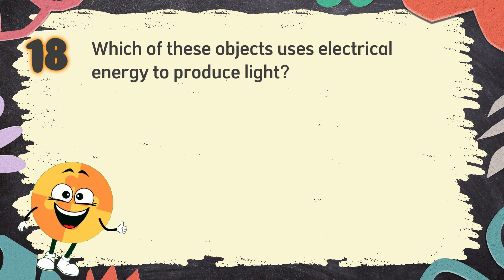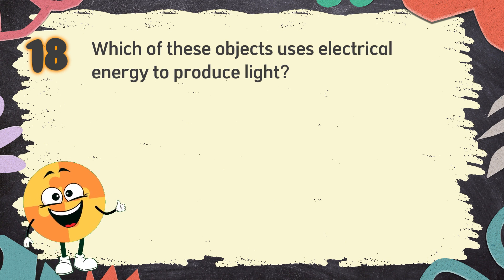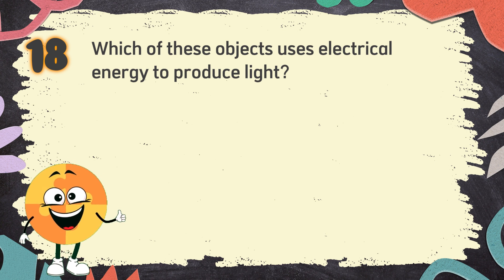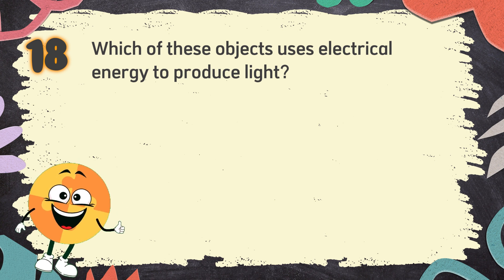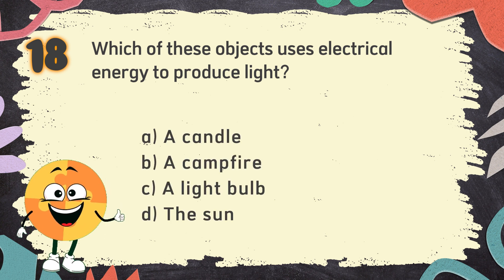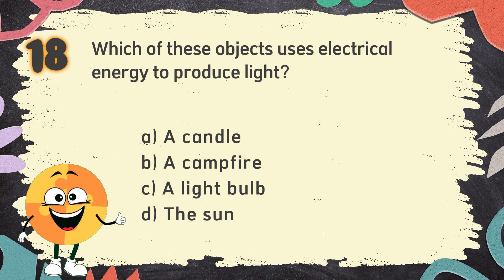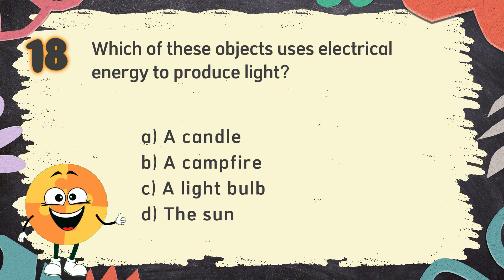Number 18. Which of these objects uses electrical energy to produce light? The choices are: A. A candle, B. A campfire, C. A light bulb, D. The sun.